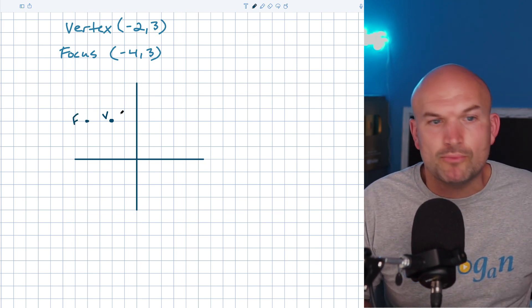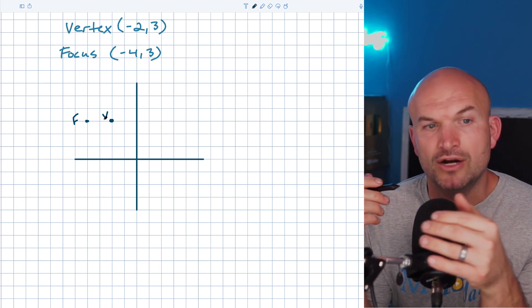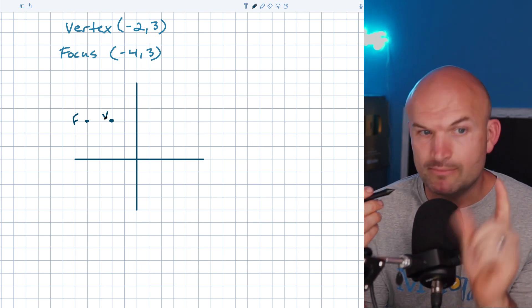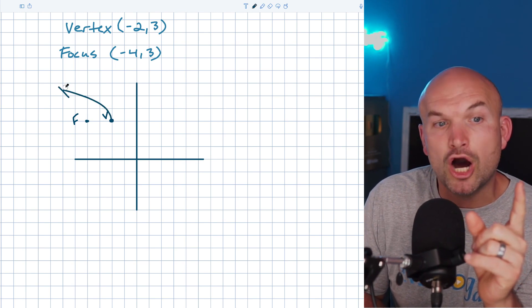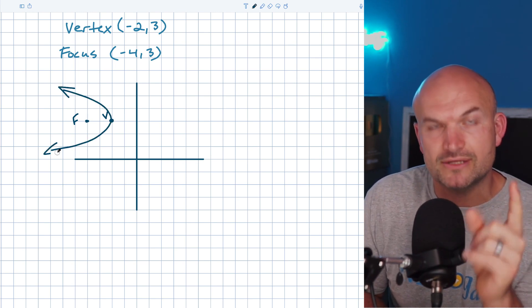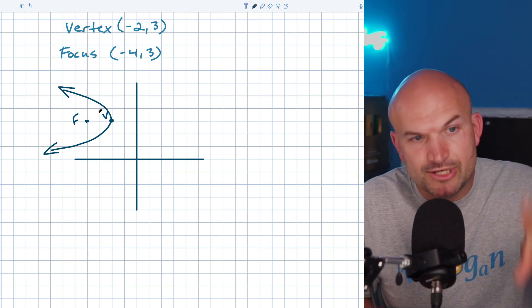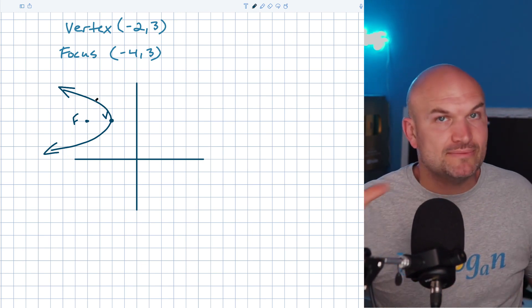Now, the reason why this is so important is because what do we know about the relationship between our vertex and our focus? The most important thing is that the vertex always opens up towards the focus. So now that we know that, we actually have a parabola that's opening up to the left.